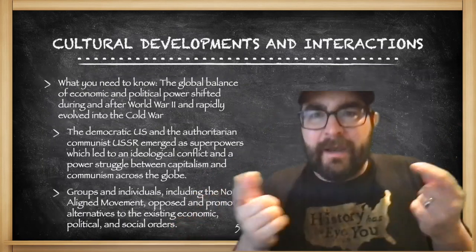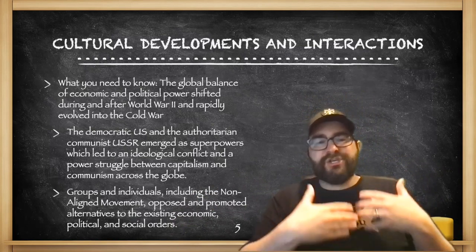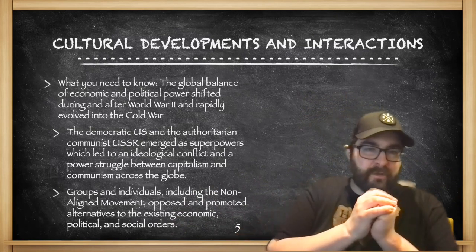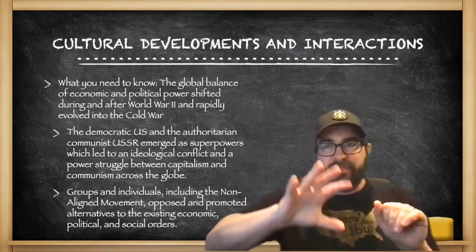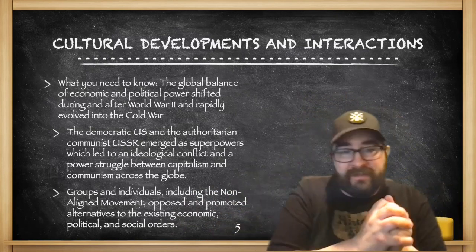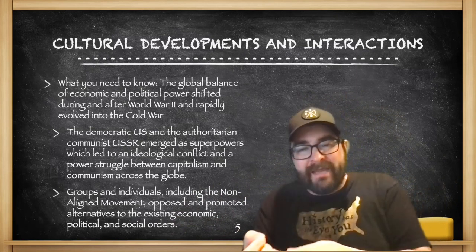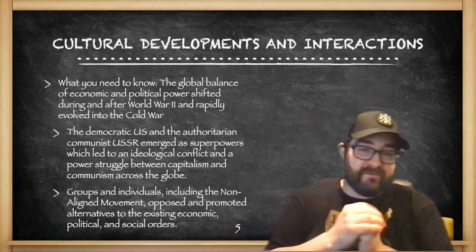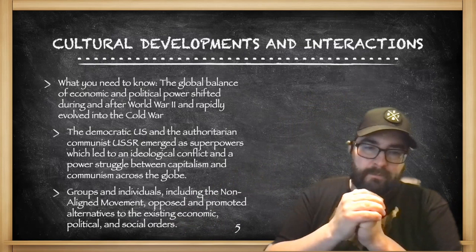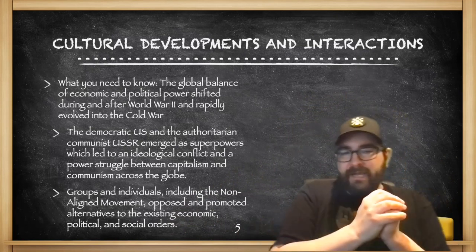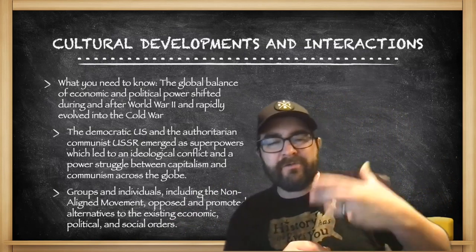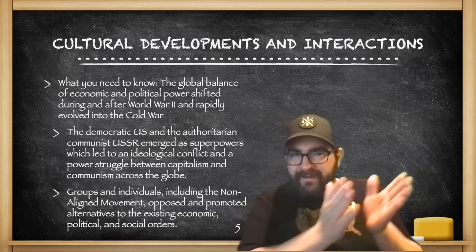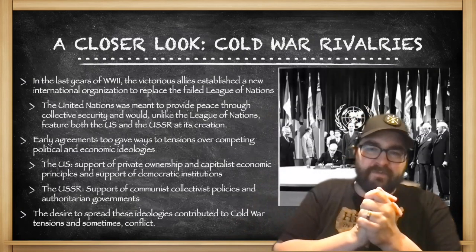The global balance of economic and political power is going to shift during and after the Second World War, rapidly evolving into the Cold War. The democratic United States and the authoritarian communist Soviet Union will emerge as superpowers, leading an ideological conflict and power struggle between the capitalist world and the communist world that'll spread to all corners of the globe. But many, including the non-aligned movement, will oppose and promote alternative visions to this existing economic, political, and social order, not necessarily stepping in line with the United States and the Soviet Union.